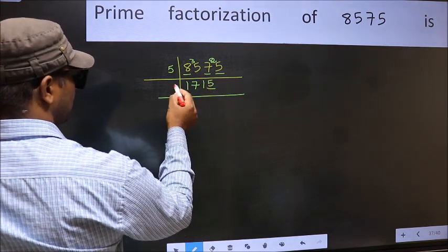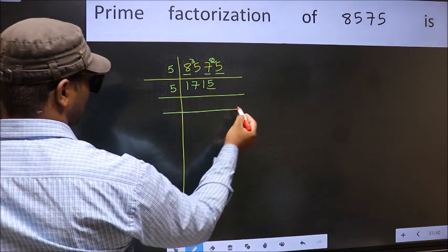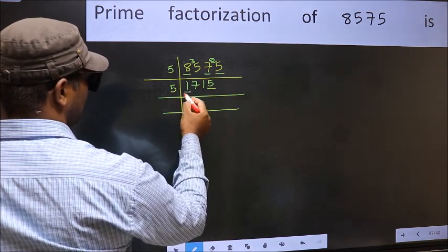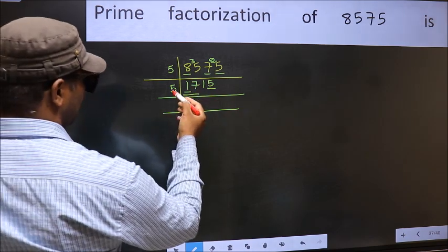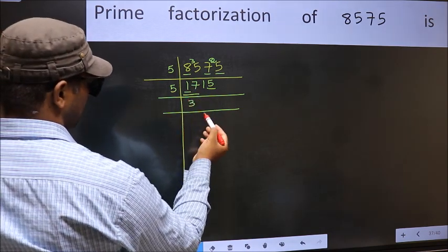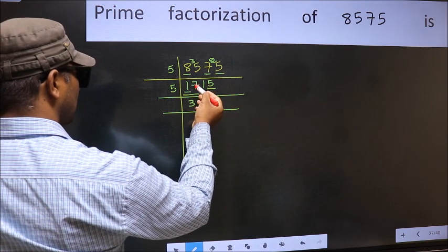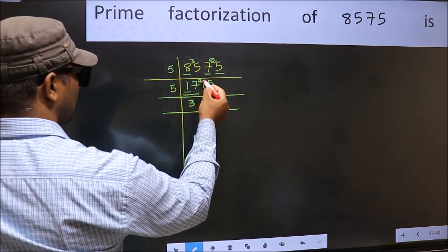Now last digit 5, so take 5. First number 1, smaller than 5, so 2 numbers, 17. A number close to 17 in 5 table is 5×3, is 15. 17-15, 2-2, carried forward 21.